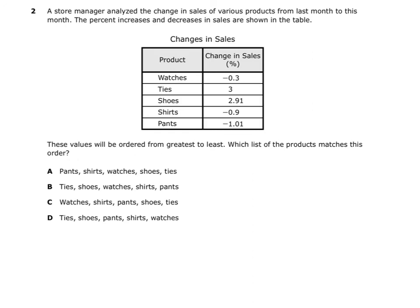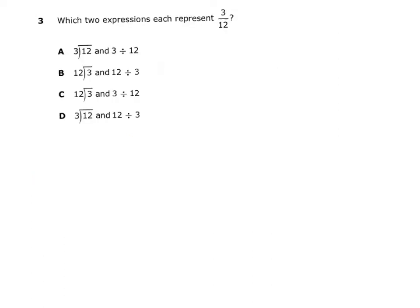Let's look at some problems and key strategies you can use during the test. The first thing I notice in this problem is that there are positive and negative numbers, and they want them in order from least to greatest. I notice that 'ties' is the highest amount — the greatest — so I can already eliminate two answers: A and C. Now I have a 50/50 shot between B and D, both of which have 'shoes' second. The only difference now is between watches at negative 3 tenths percent and pants at negative 1 and 1 tenths percent. Since I'm looking for the greatest value, it would be the negative 3 tenths — a less negative number — so my answer is B, watches.